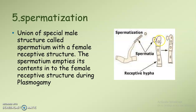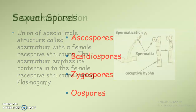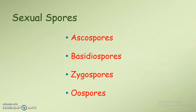After emptying the contents, we can see two nuclei inside the receptive structure, and they fuse to form a diploid zygote. That is spermatization — it occurs with the help of a special male structure called spermatium uniting with the female receptive structure.